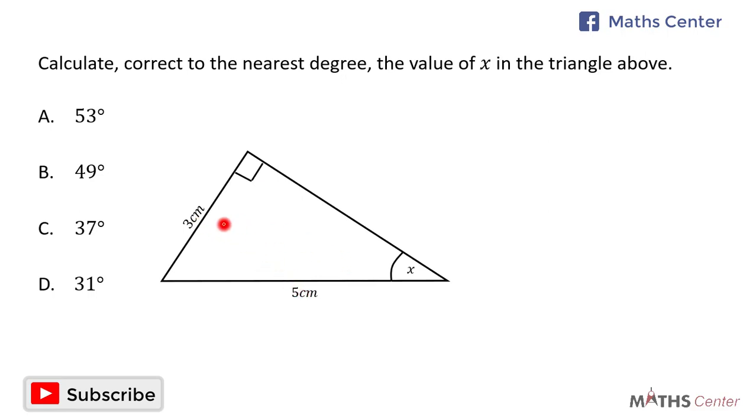Considering x, 3 centimeters is opposite to x. So we have 3 centimeters as opposite to x and 5 centimeters as the hypotenuse. We have opposite and hypotenuse, so the ratio we are going to use is sine because sine will give us opposite divided by hypotenuse.